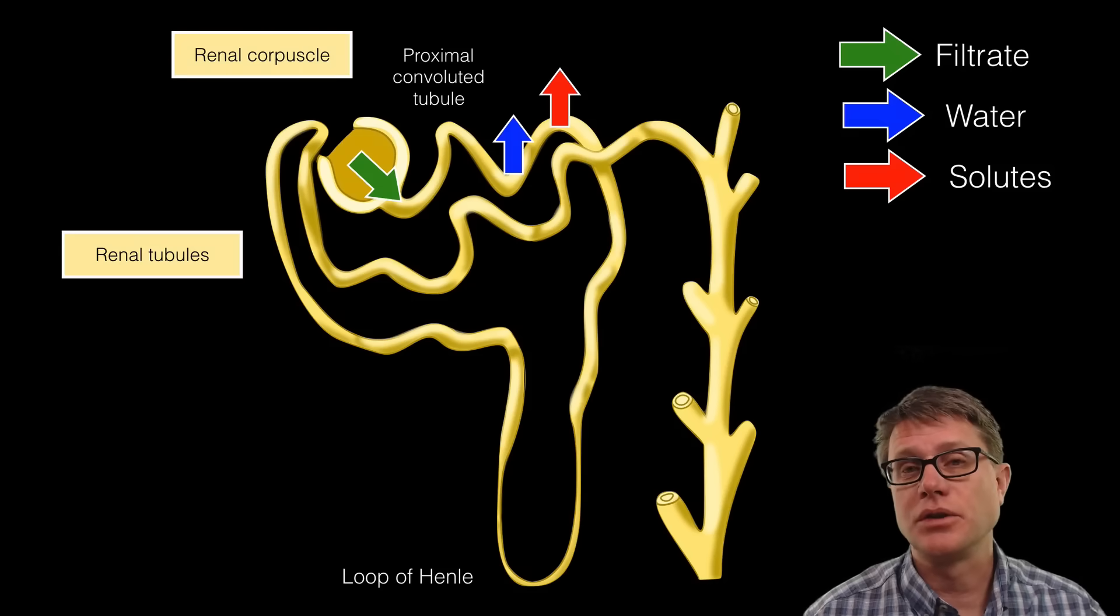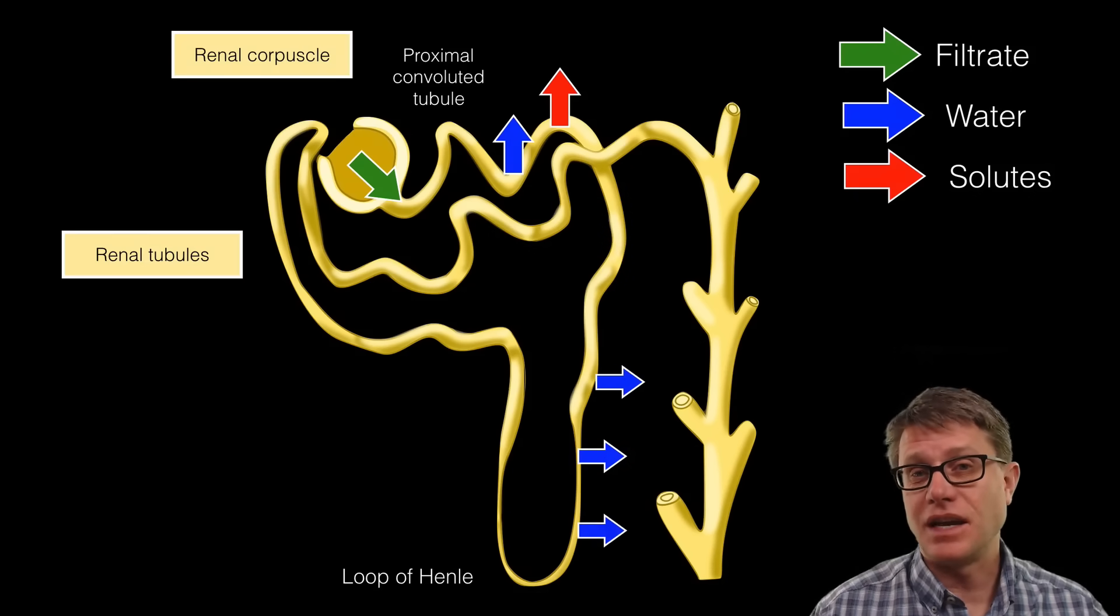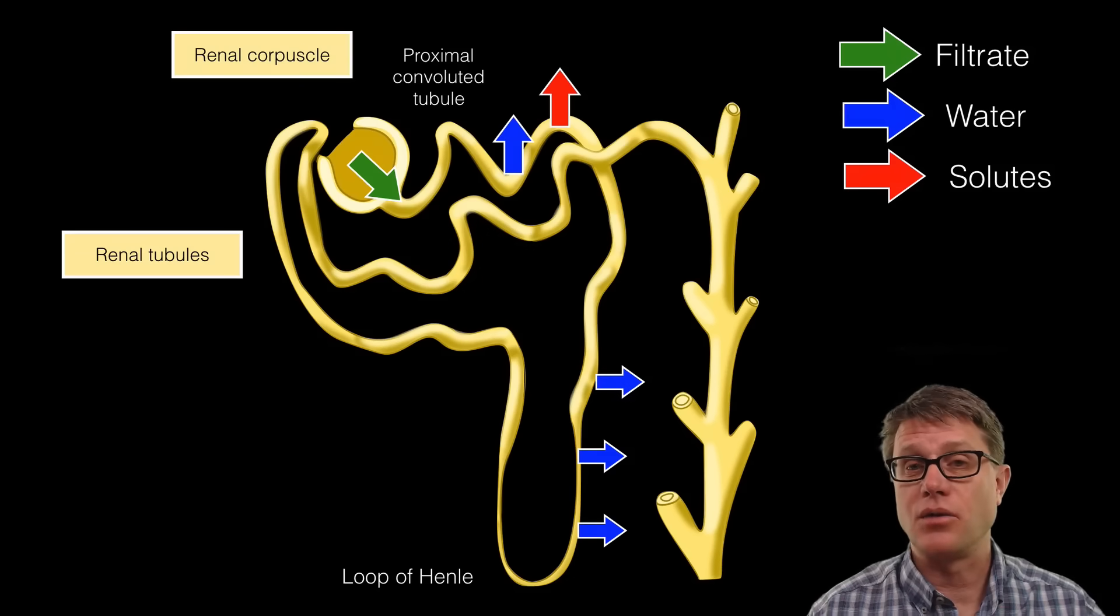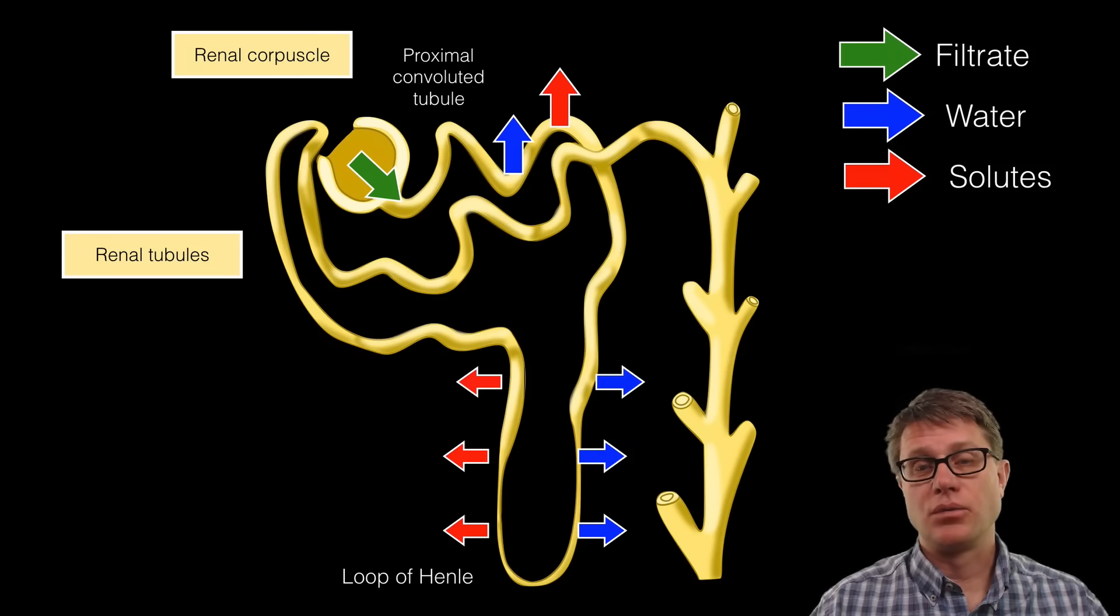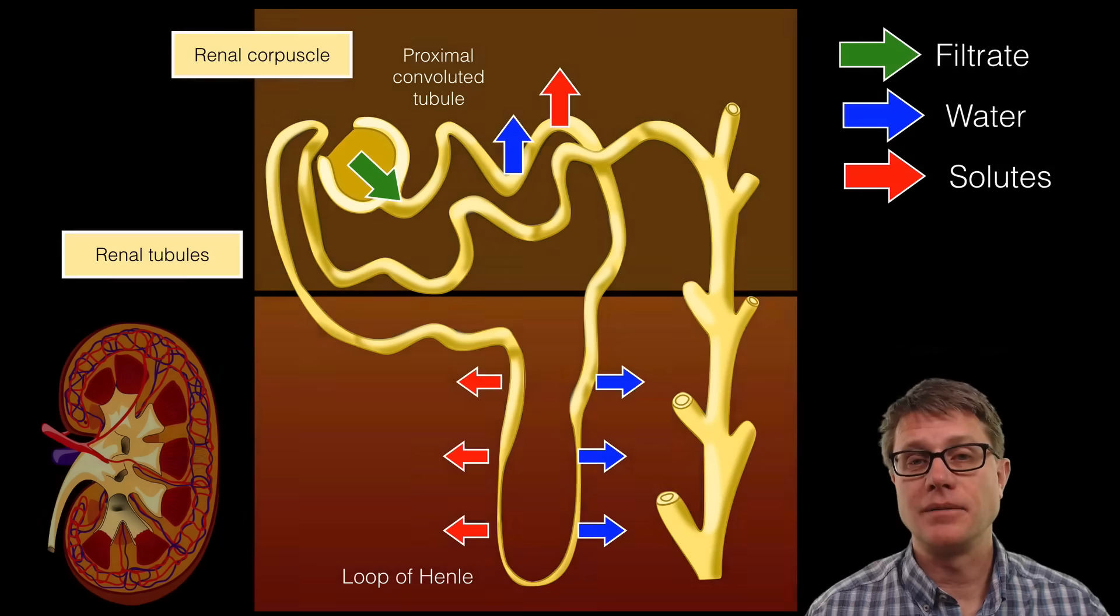From there the renal tubules flow down into what's called the loop of Henle. We have a descending limb of the loop of Henle where we're reabsorbing a lot of water. Then in the ascending limb of the loop of Henle we're reabsorbing a lot of sodium and chloride—those salts are coming back into our body.